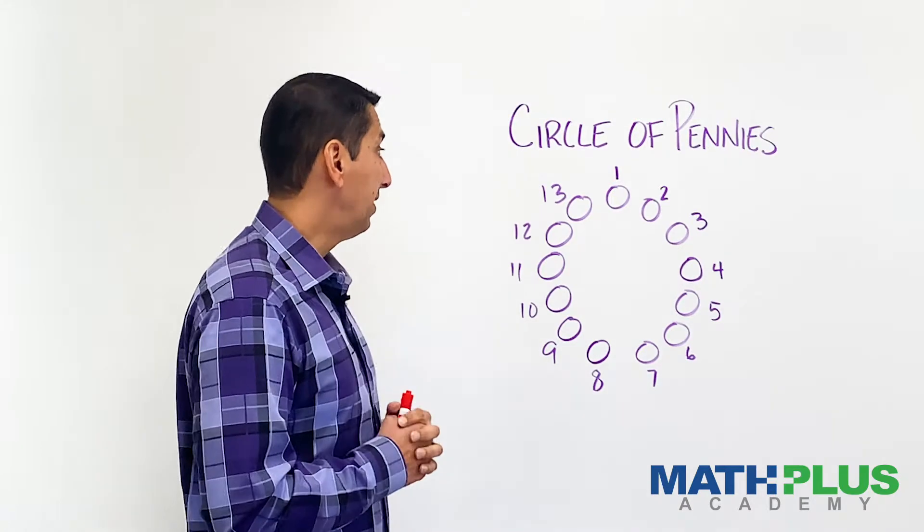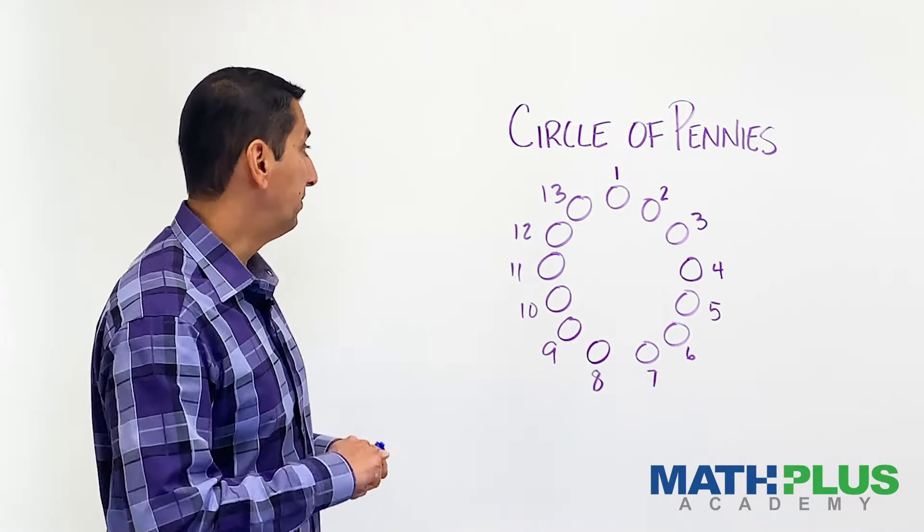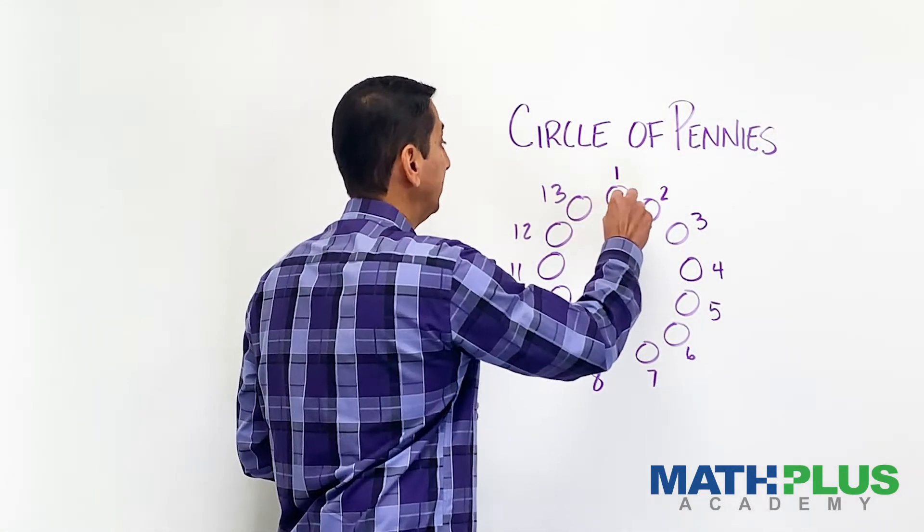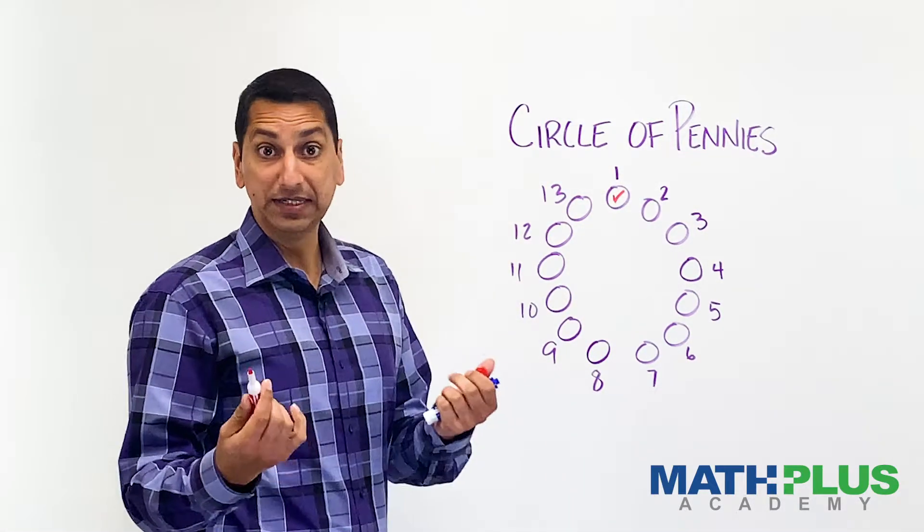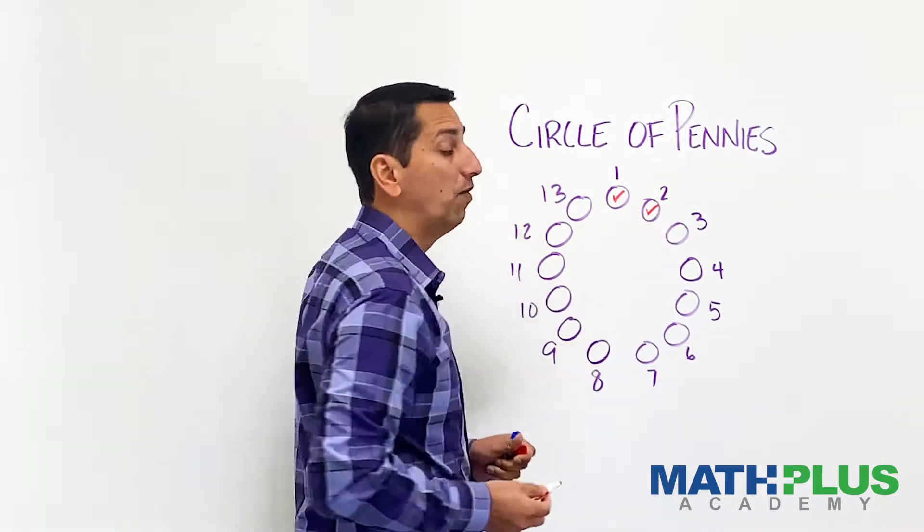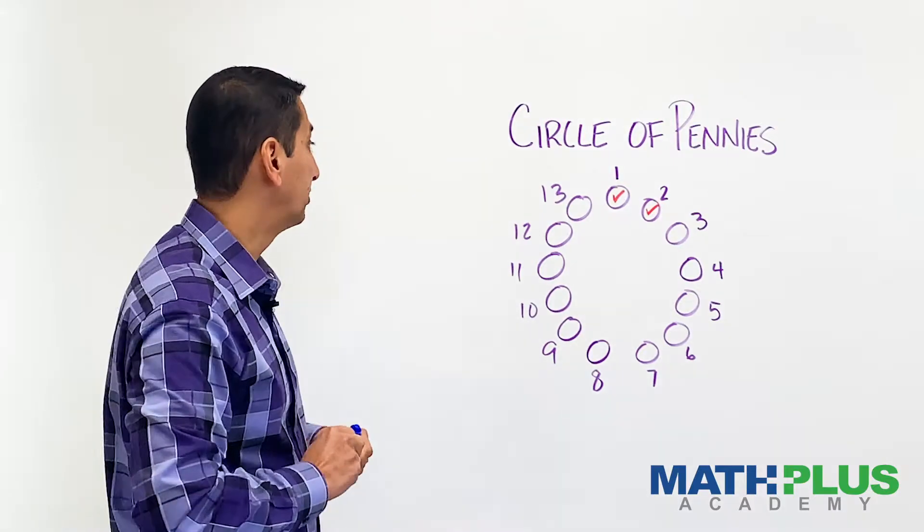First person goes. Maybe the first person, which I'll make red, decides to take this penny, and if they want to take two, they can take one of these attached ones. Maybe they take one and two. Okay, those pennies are gone.